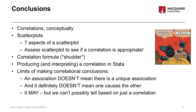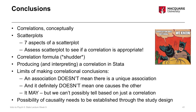The possibility of causality really needs to be established through the design of the study in order to conclude, based on the statistics we run, that there is a cause and effect relationship. That's the end of correlation. Next week, we're moving on to another statistical test: chi-square tests.